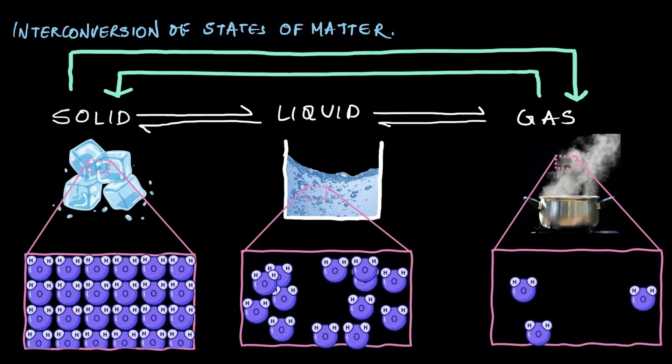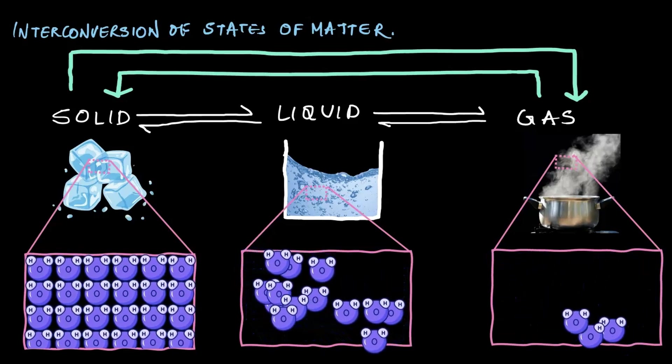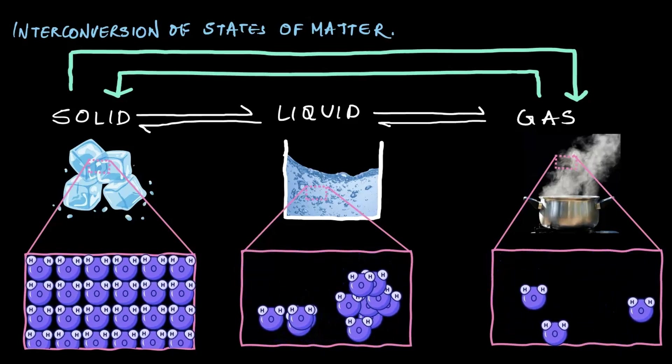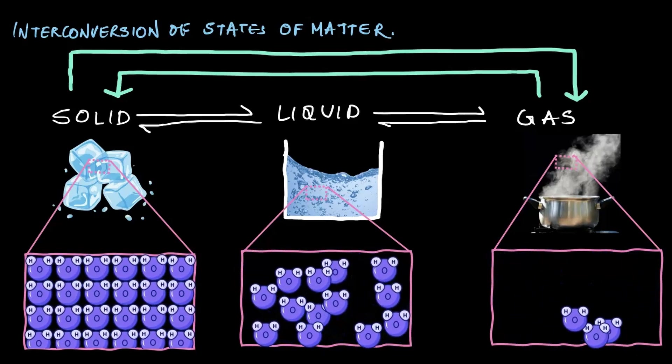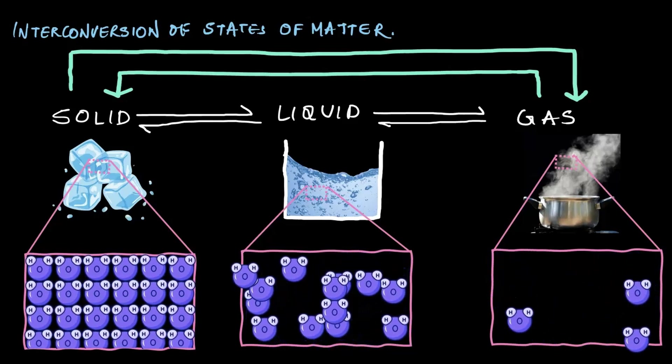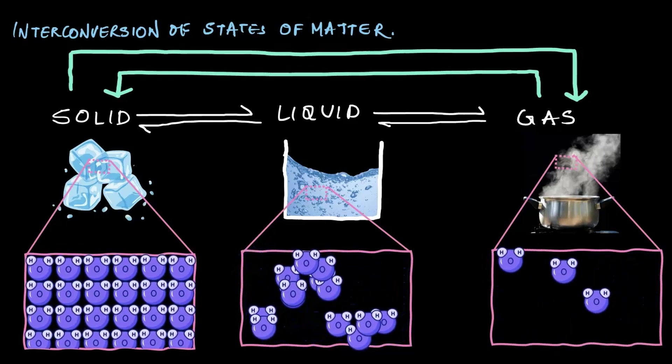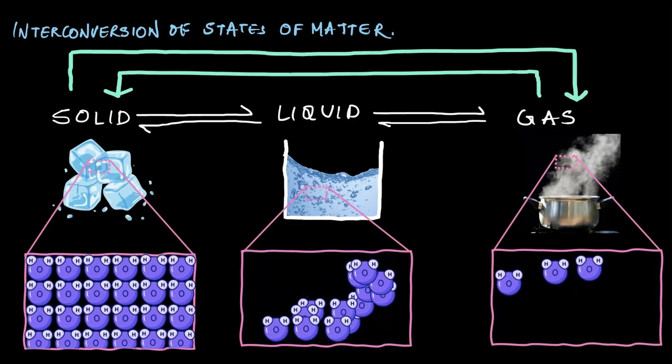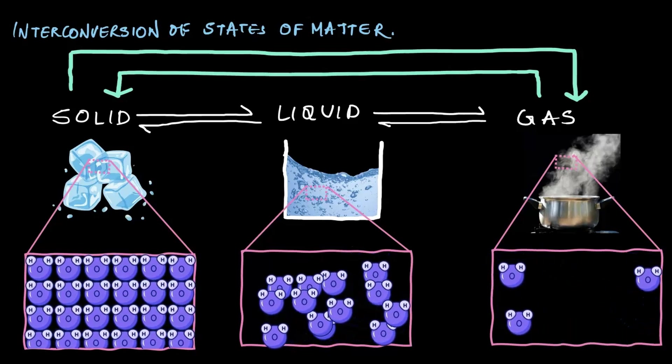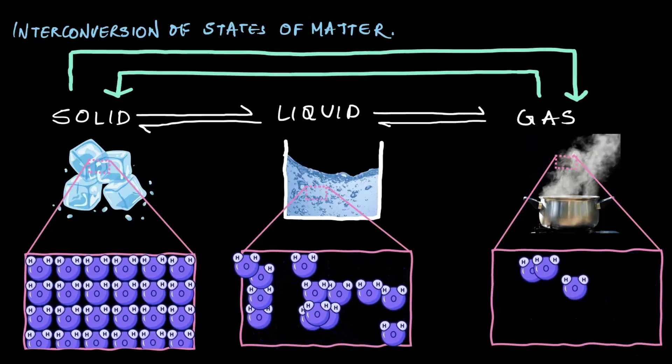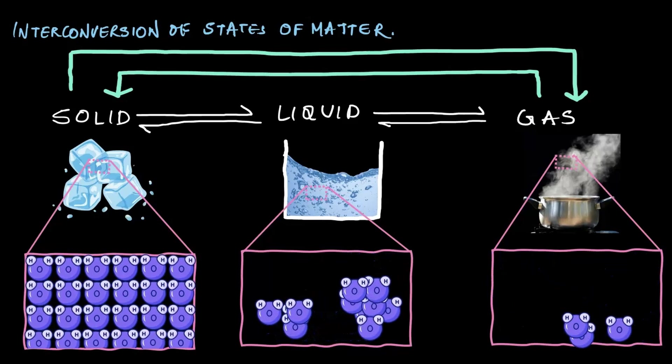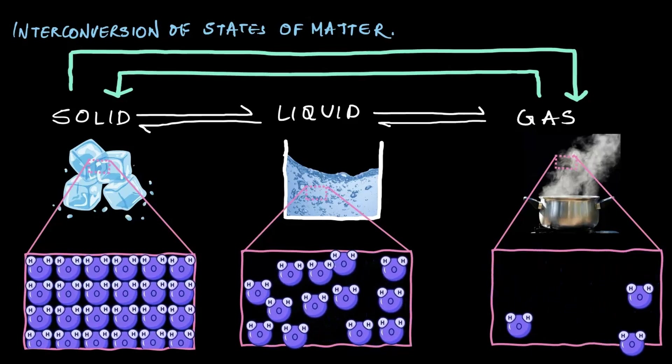Now, here is the interesting part. How do we change from one state to another by just looking at these three diagrams about how the particles are arranged in these three states? What would you do if you were asked to convert from gas to liquid, liquid to solid, and vice versa? It's simpler than you might think. Take a moment and think about it.